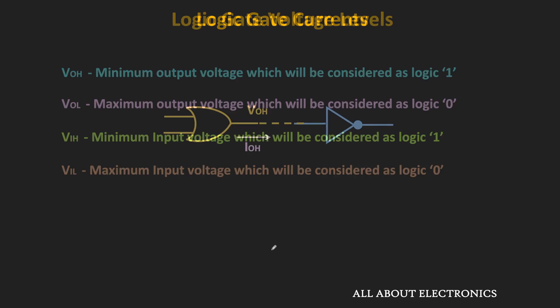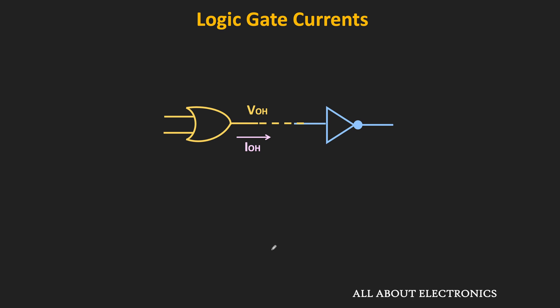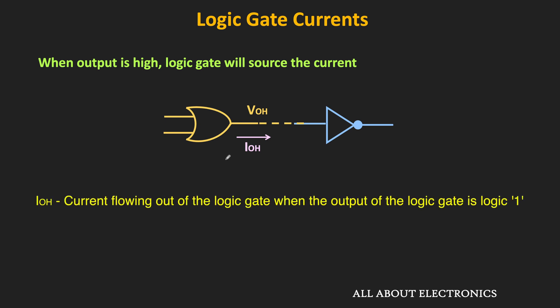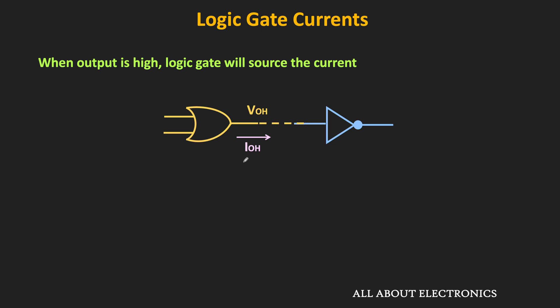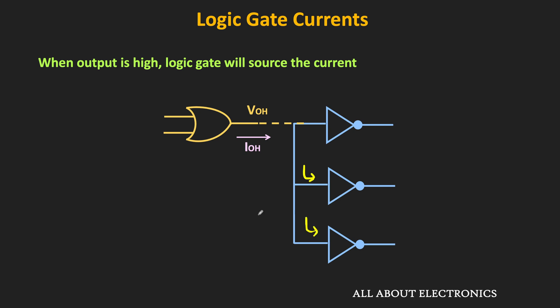The value of these current parameters or current levels will decide the fanout of the logic gate. Let us understand these current parameters one by one. Let's say the output of an OR gate is connected to a NOT gate, so the output of the OR gate will act as an input for the next gate. When the output of the logic gate is high, then it will source the current to the next gate — in other words, it will supply the current to the next gate. This current flowing out of the logic gate when the output is high is known as IOH. The value of this current will depend on the load, which refers to the number of logic gates connected at the output side. As we connect more gates at the output, the value of IOH will also increase. So typically in the datasheet, the maximum value of IOH is mentioned, showing the maximum current that the logic gate can supply when the output is high.